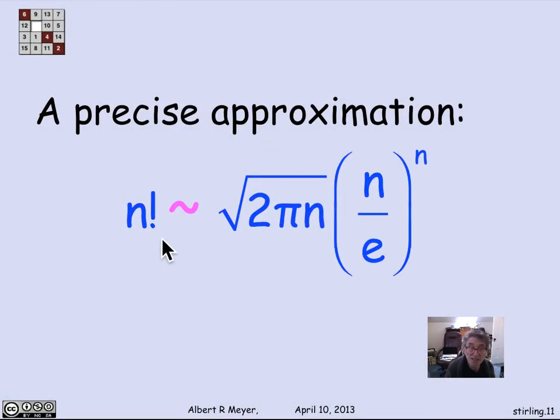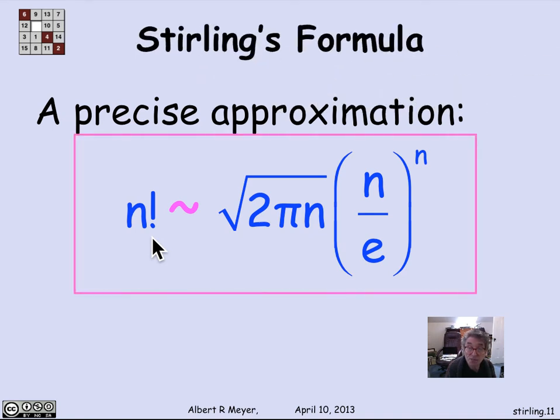A precise approximation is that n factorial is actually asymptotically equal to the square root of 2 pi n times n over e to the n. And we're not going to prove that. It requires elementary calculus, but more than we want to take time for. And this crucial formula, though, that we will be using very regularly to estimate the size of n factorial is called Stirling's formula. And it's one to have on your crib sheets if you haven't memorized it.